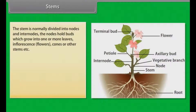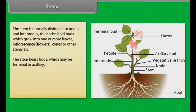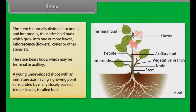The stem is normally divided into nodes and internodes. The nodes hold buds which grow into one or more leaves, inflorescence, flowers, cones or other stems. The stem bears buds, which may be terminal or axillary. A young undeveloped shoot with an immature axis having a growing point surrounded by many closely packed tender leaves is called a bud.